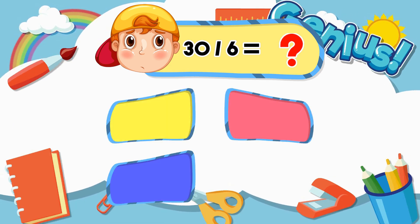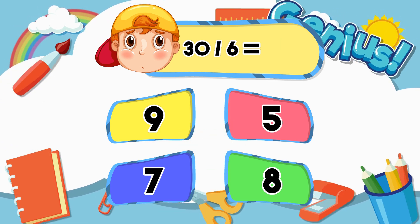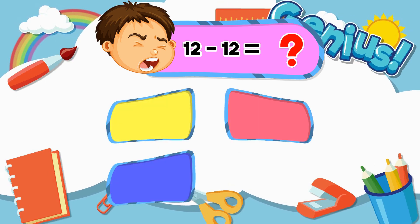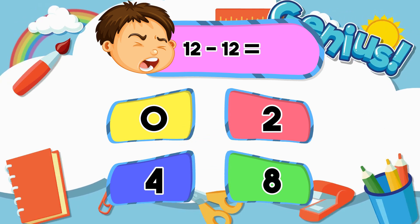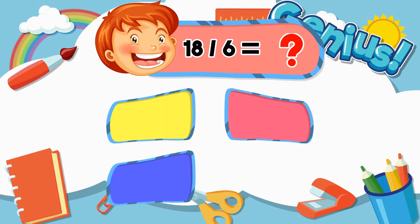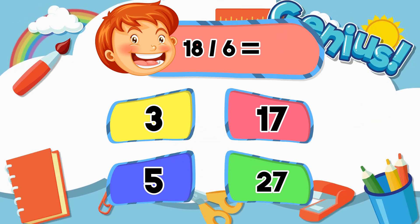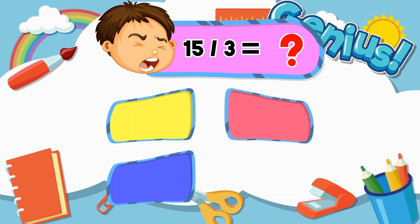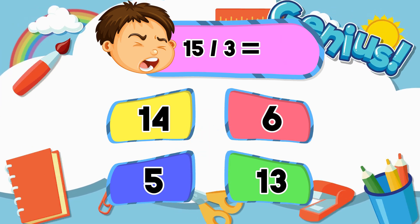What is 30 divided by 6? Options: 21, 22, 23. Answer: 5. Three, fourteen, six, five, thirteen, five.